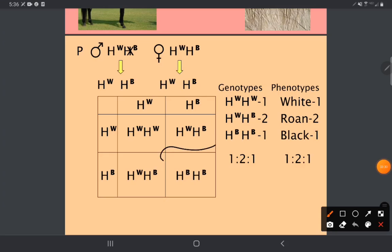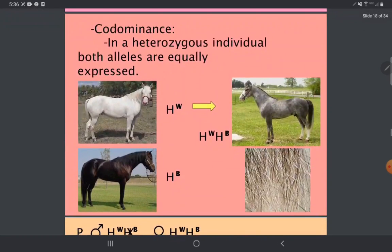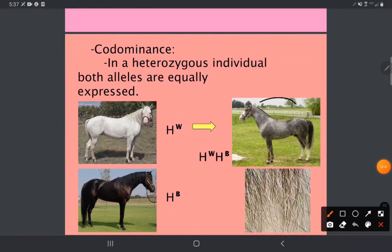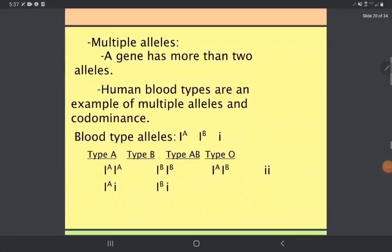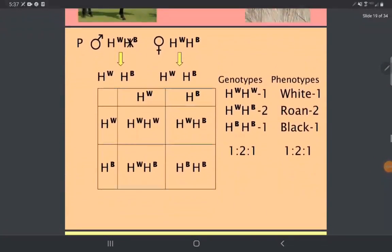The genotype and phenotype ratios are equal because the heterozygotes get their own special phenotype. Whereas before, all three of these would have been one phenotype, now the heterozygotes get their own phenotype, which is roan. Roan means mix. This right here is a roan horse.